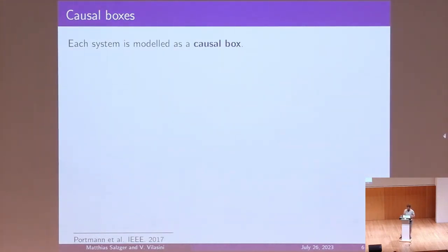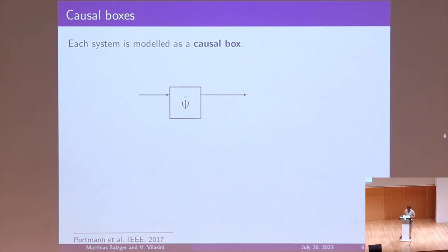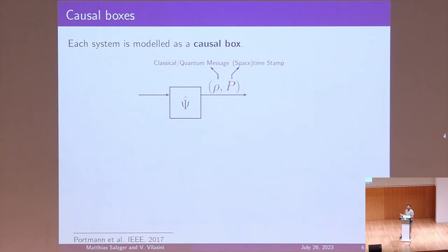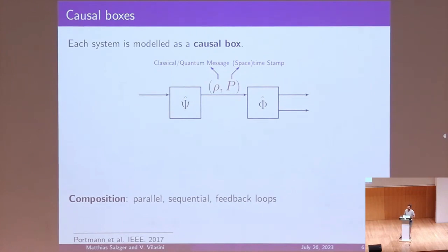Causal boxes are quite different from process matrices. Here every system is just a causal box — you can intuitively think of these as boxes with some input wire and output wire. You can send messages on these wires, and these messages consist of some classical or quantum message, indicated by rho, but they also have a spacetime stamp p. This is different from the process matrix framework, where we drop every assumption of having a background spacetime; here we have it explicitly in the framework.